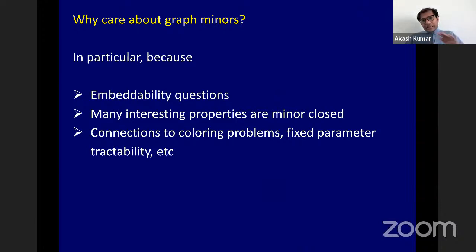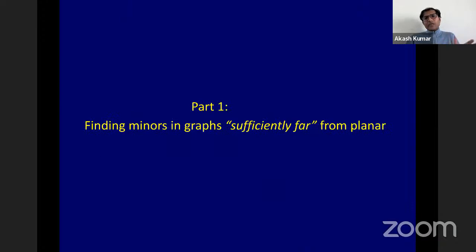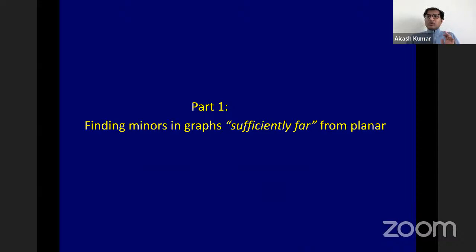Now I'm going to assume that all of us care about graph minors and move to the first part of the talk. I'd like to find minors in graphs that are sufficiently not planar. Let's try to see what this notion of 'sufficiently far' means and formalize it.